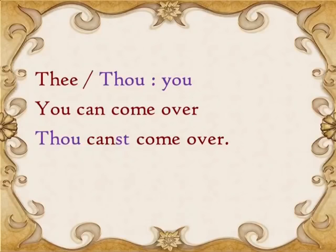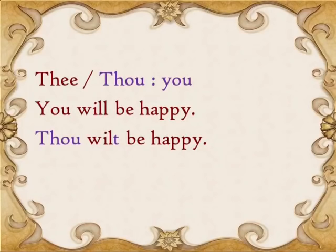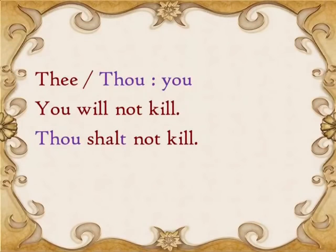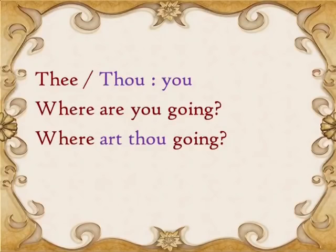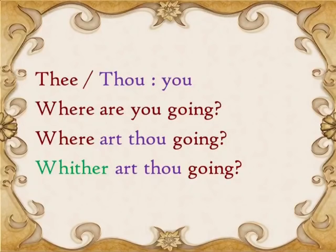We'll understand this with a couple more examples. 'You will be happy' would be pronounced 'thou wilt be happy.' Once again, I'm adding a suffix at the end of the verb that is attached to the thou. In the biblical example, 'you will not kill' is pronounced 'thou shalt not kill,' or 'you shall not kill.' 'Where are you going?' becomes 'where art thou going?' Speaking of which, 'where' is pronounced 'whither' back then, so 'where art thou going' becomes 'whither art thou going?'